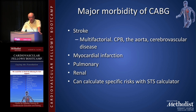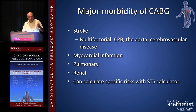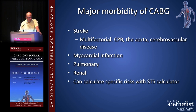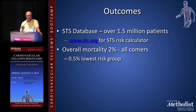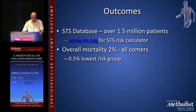A major driver for pursuing less invasive approaches and the advancement of PCI is that CABG, even today, carries significant complications — greatly reduced, but still present: stroke, myocardial infarction, lung problems, and kidney problems. You can calculate predicted risk of mortality and complications for an individual patient using the STS risk calculator — just search 'STS risk calculator' and type in the patient data. In three to four minutes it provides predicted mortality risk and complication probabilities such as kidney failure and prolonged ventilation — useful when discussing the surgery option with patients.